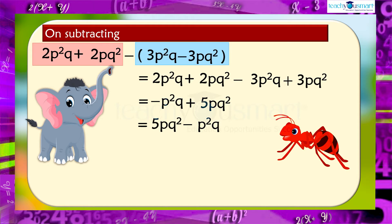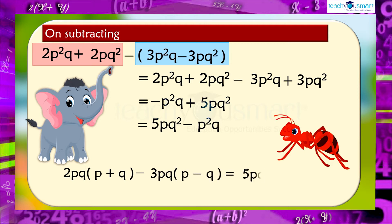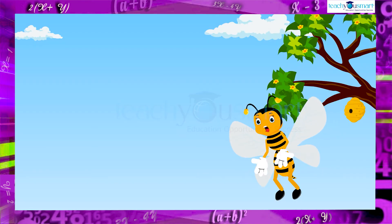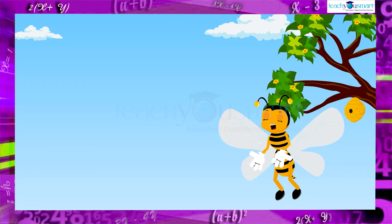Therefore, 2pq multiplied by p plus q, minus 3pq multiplied by p minus q, equals 5pq squared minus p squared q. We have learned how to simplify the given expression.